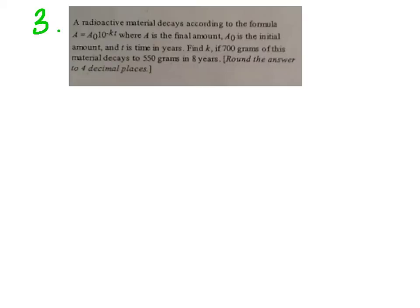All right, halfway home. Two down, two to go. A radioactive material decays according to the formula. A equals. This little guy has read a sub 0. Remember, that's a subscript, and we've talked about that with logs. a sub 0, 10 raised to the negative kt. So, let's go ahead and get that down on paper. a sub 0, just a little 0. 10 to the negative kt. Where a is the final. So, again, it tells you everything. a is the final.